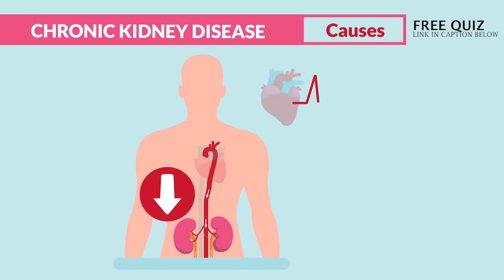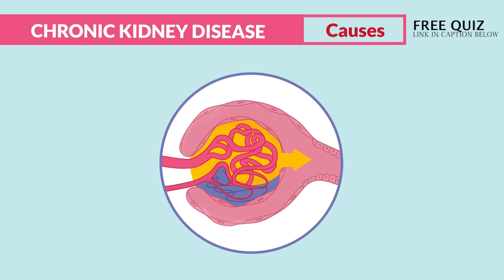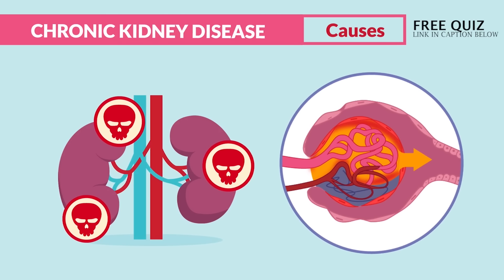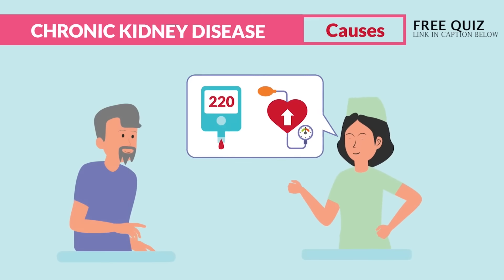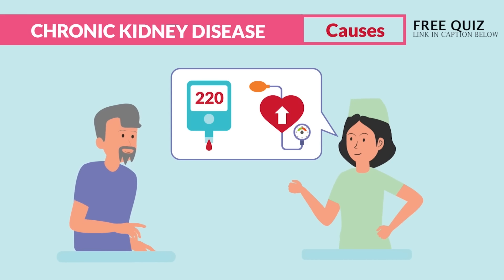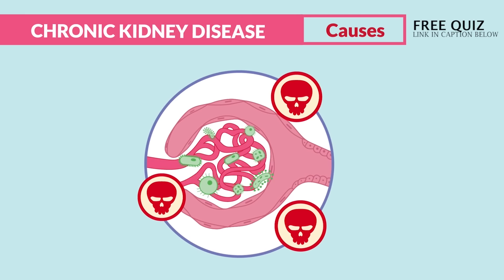Or think about a patient with years and years of uncontrolled high blood pressure — all that pressure coming from the heart, just pounding against the blood vessels inside the kidneys, eventually scarring and hardening those glomeruli, leading to less blood flow and resulting in kidney failure. That's why it's so important to educate your clients to control their sugar and high blood pressure.